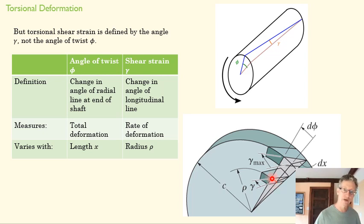The angle of twist here is smaller here and larger out here, so gamma is actually larger near the edge of our disc than it is toward the center. Angle of twist measures our total deformation. It varies with length. The rate of twist is our shear strain, the rate of deformation, and it varies with our radius.